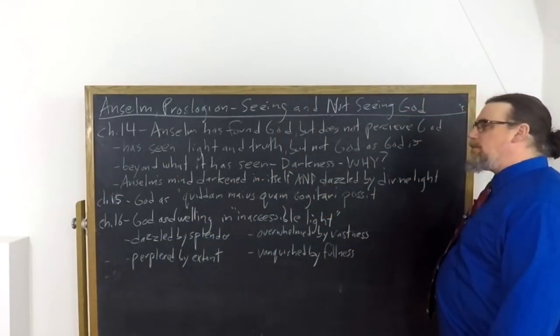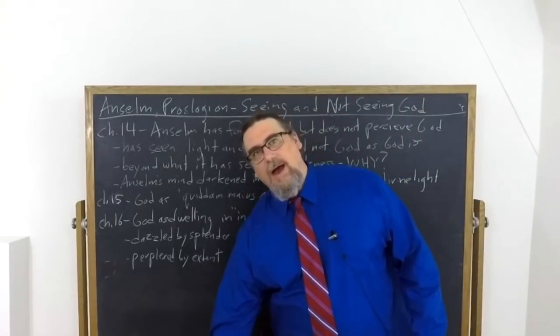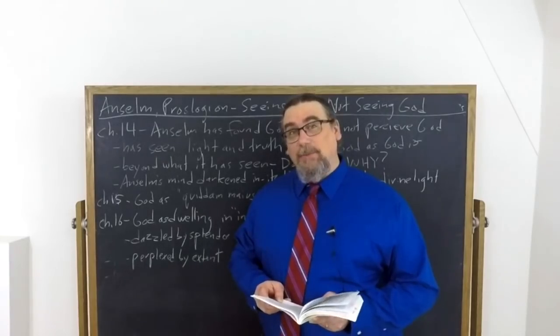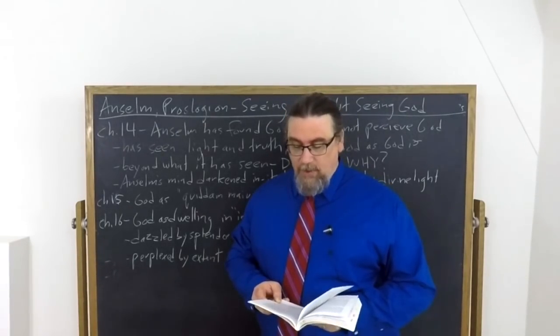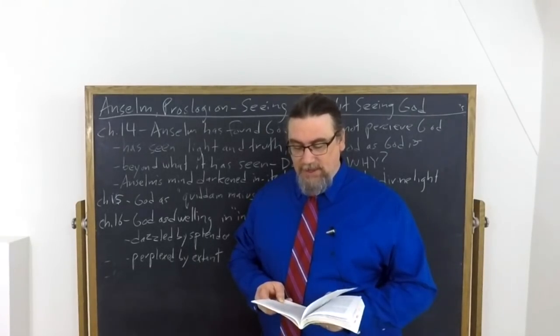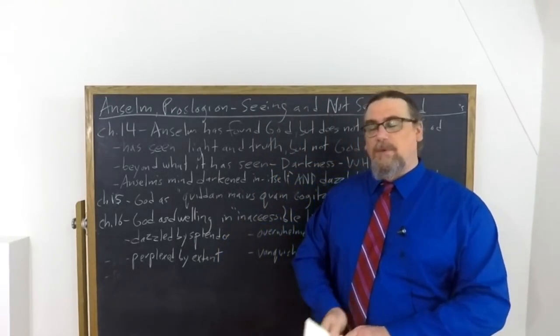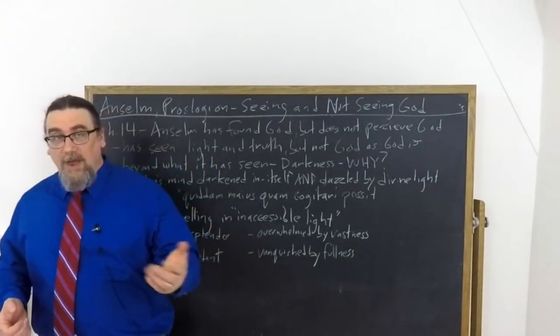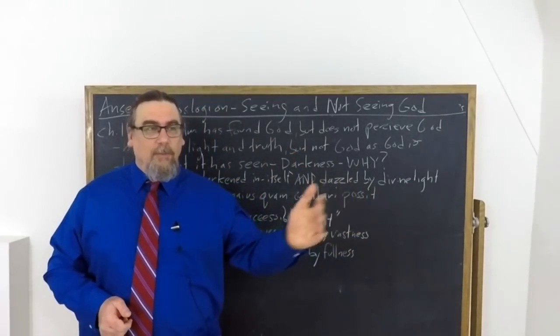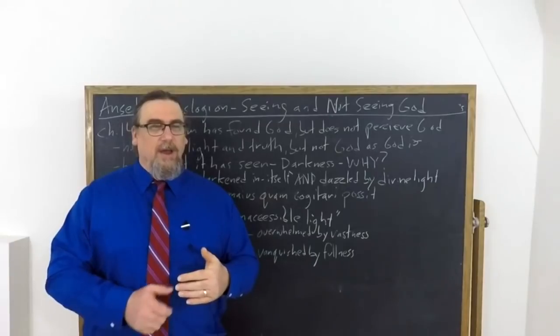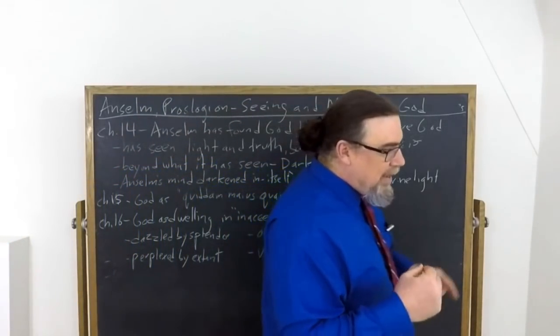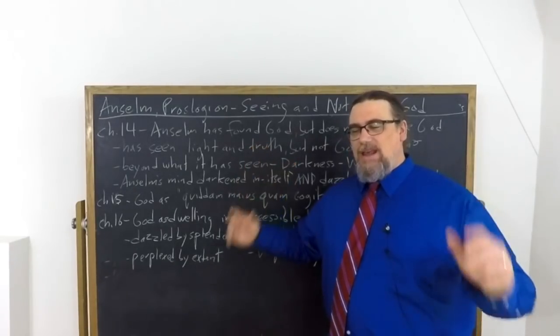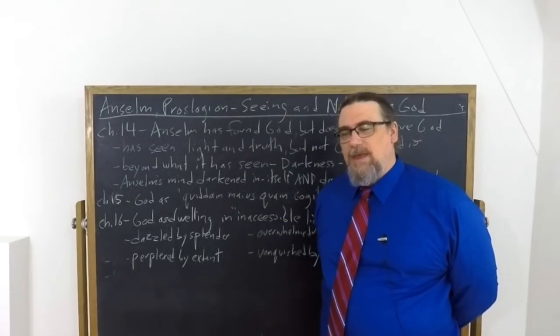So quidem maius quam cogitari possit is another way of understanding what God is. Anselm even provides a bit of argumentation here. He says that since it's possible to think that such a being, namely a being greater than can be thought, exists, then if you are not that being, it's possible to think of something greater than you, but that is impossible. So the very same logic by which Anselm argued for the existence of God, for the greatness of God in so many other ways, justice, eternity, truth, all these other divine attributes, he now is using to argue that God is something that is greater than anything we can even think of. He is beyond our thinking.